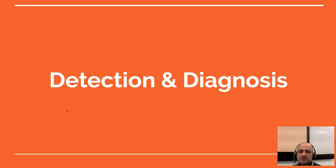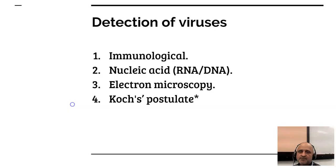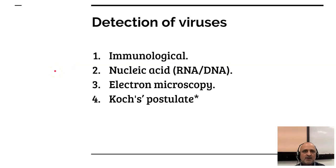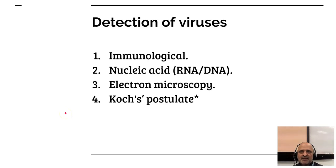We now move on to detection and diagnosis of viruses. Detection of viruses can be done in three ways: one is by immunological detection using antibodies; the second is nucleic acid detection using either the polymerase chain reaction or reverse transcription of RNA viral genomes followed by real-time PCR; and the third is electron microscopy. Koch's postulate may also be needed to validate the infectious cycle of some viruses.